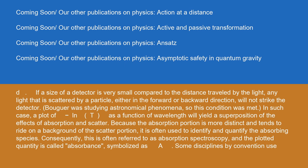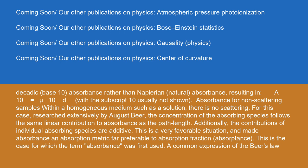Because the absorption portion is more distinct and tends to ride on a background of the scatter portion, it is often used to identify and quantify the absorbing species. Consequently, this is often referred to as absorption spectroscopy, and the plotted quantity is called absorbance, symbolized as A. Some disciplines by convention use decadic (base-10) absorbance rather than Napierian (natural) absorbance, resulting in A₁₀ = μ₁₀ × d, with the subscript 10 usually not shown.